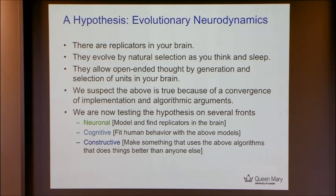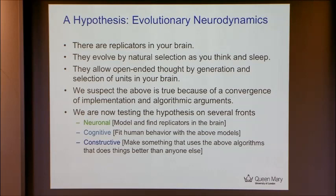At the neuronal level, we're actually looking to see whether things could replicate in your brain, whether there could be units of evolution. At the cognitive level, to try and fit human behavior to evolutionary models. And at the constructive level, to see if we can make robots that use evolution in their controllers in order to produce open-ended behavior.